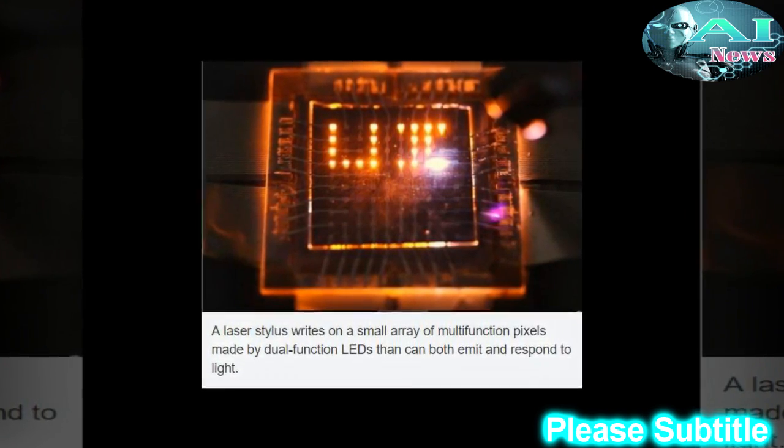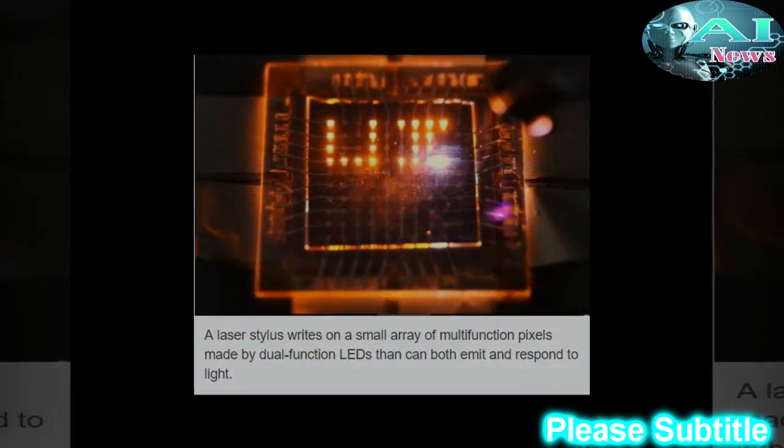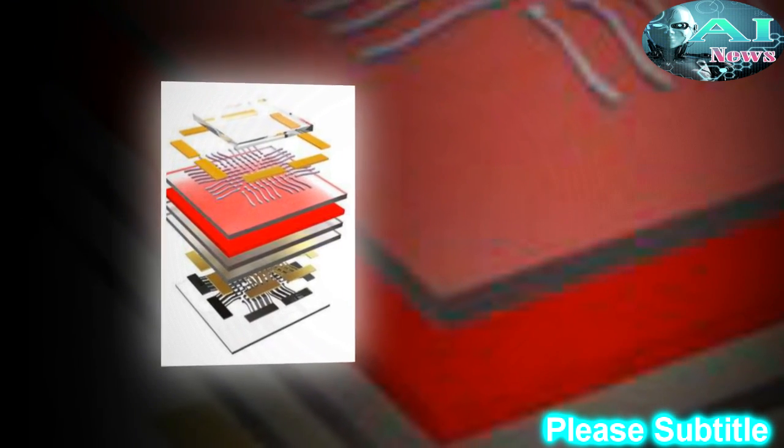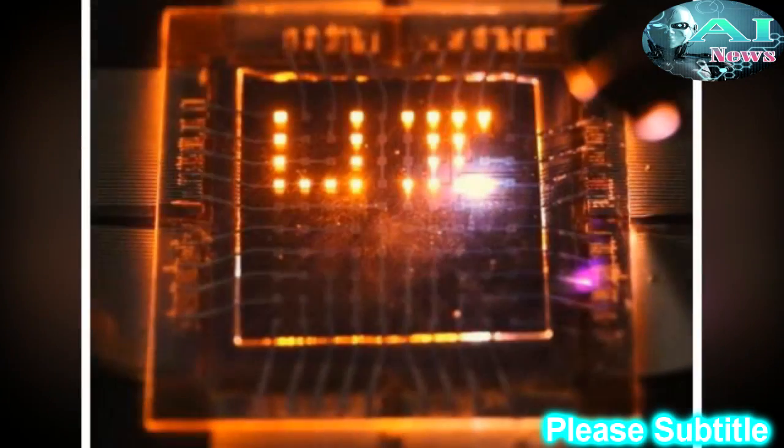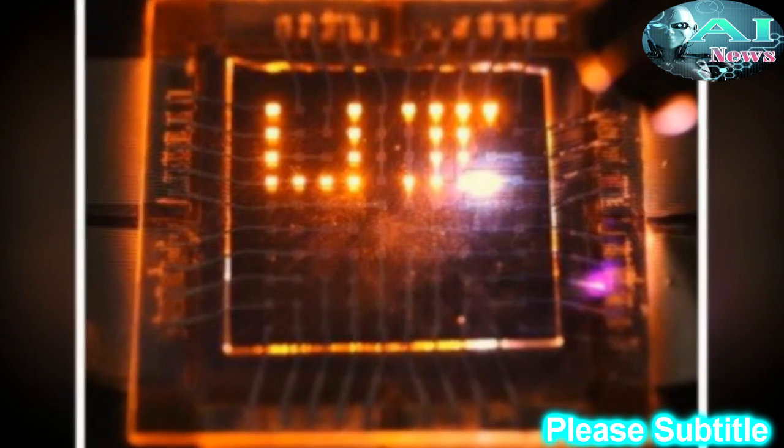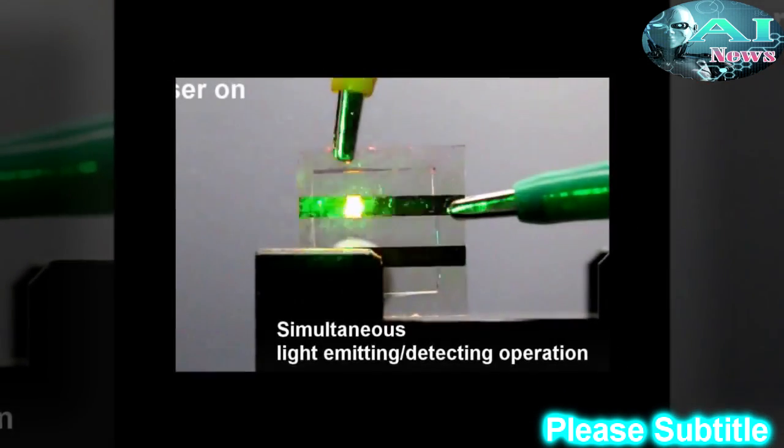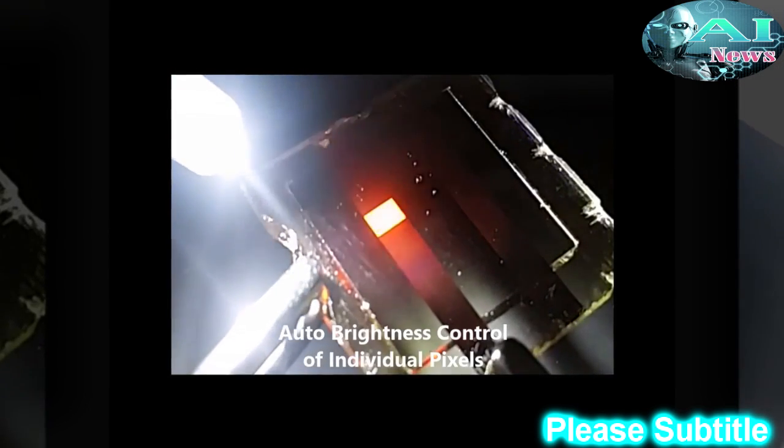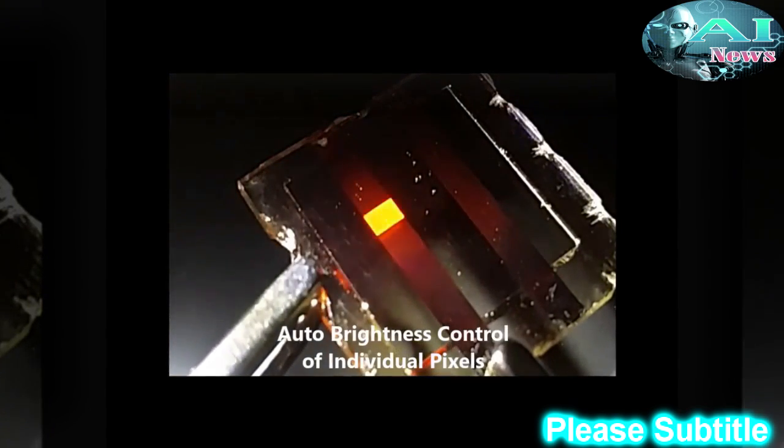In fact, it's three orders of magnitude faster than standard display refresh rates. Yet the LEDs are also near continuously detecting and absorbing light, and a display made of the LEDs can be programmed to respond to light signals in a number of ways. For example, a display could automatically adjust brightness in response to ambient light conditions,